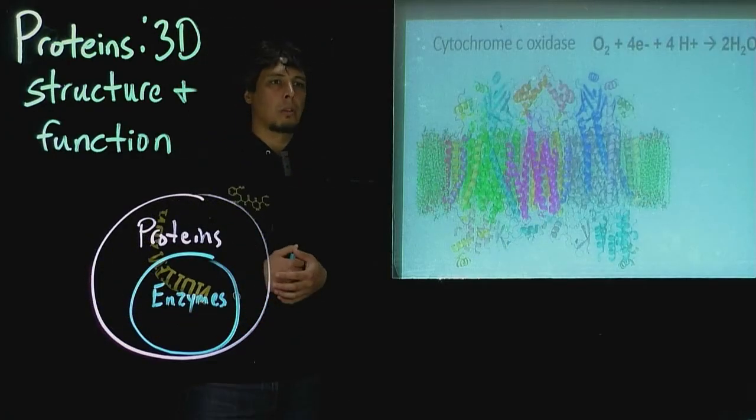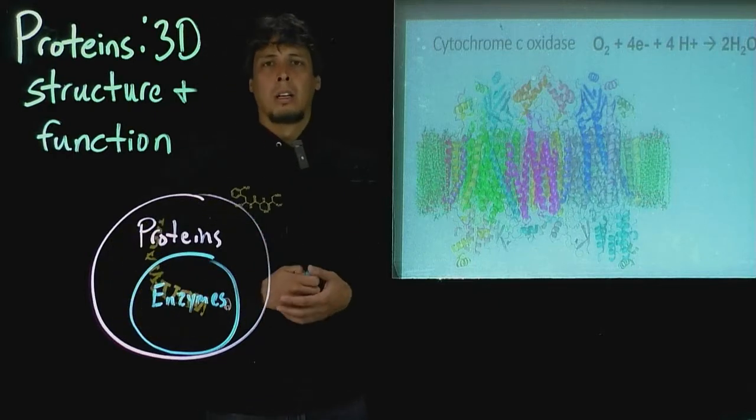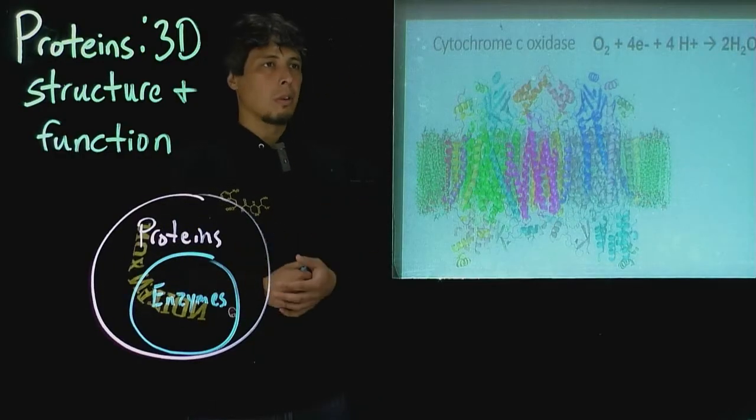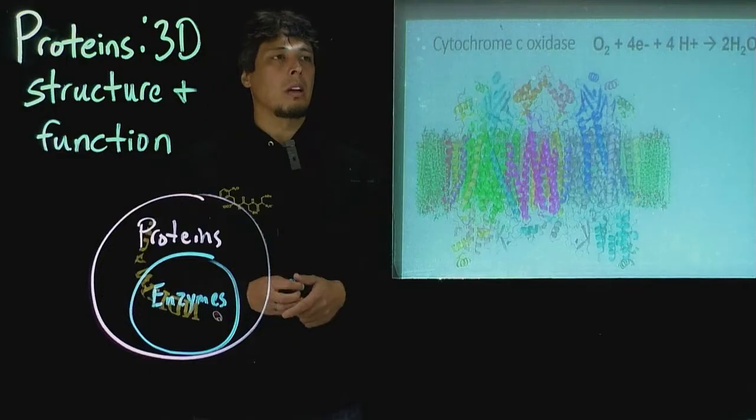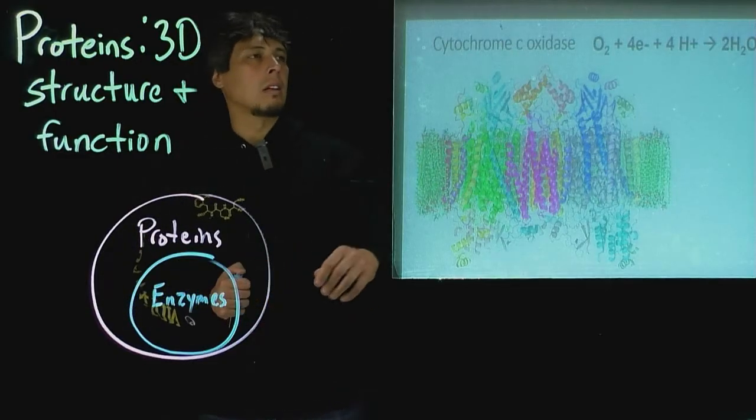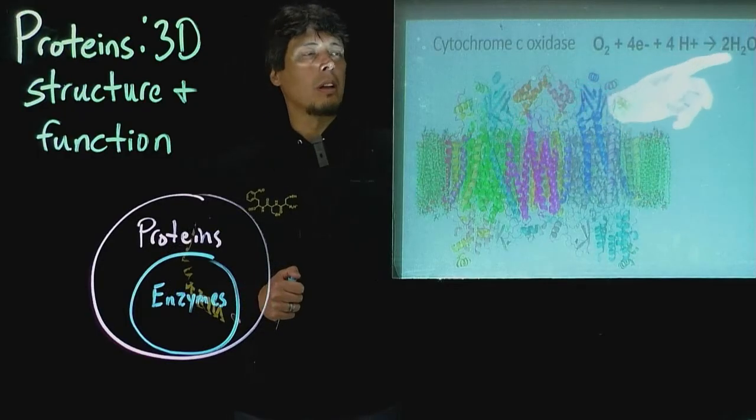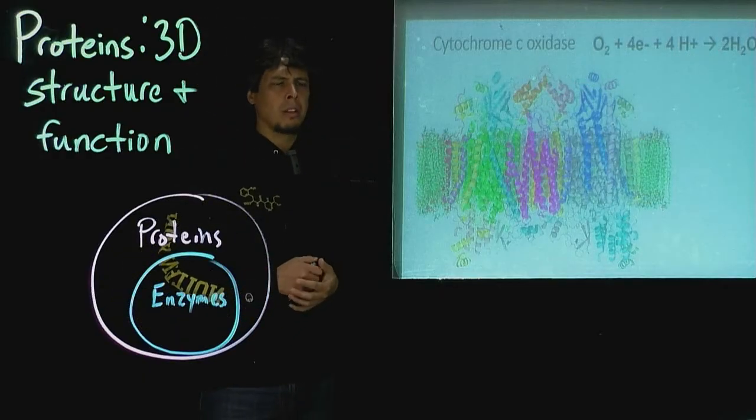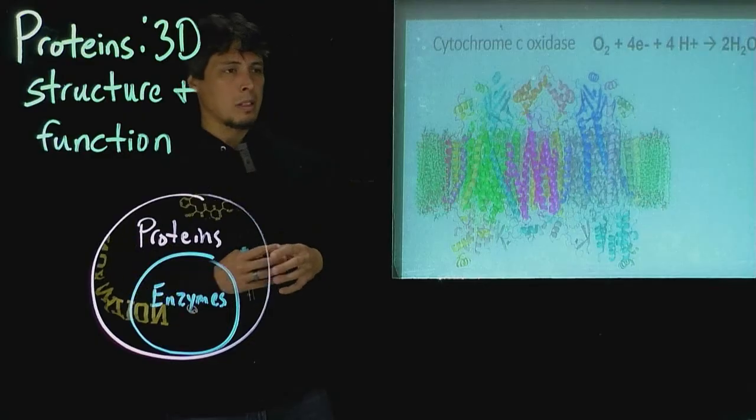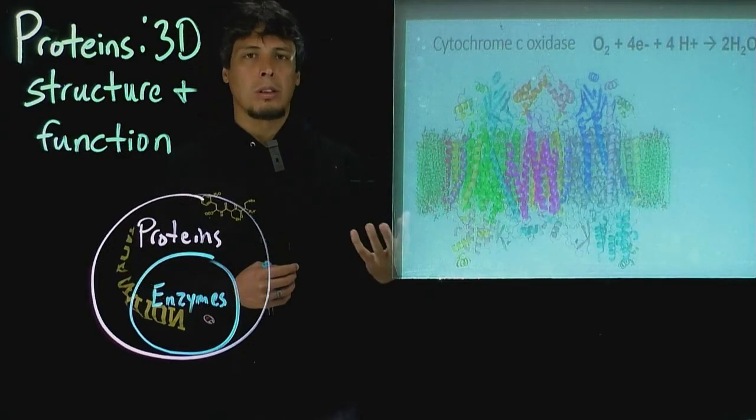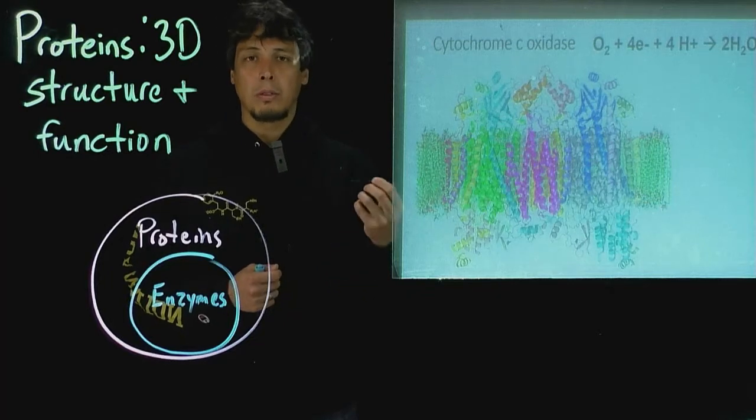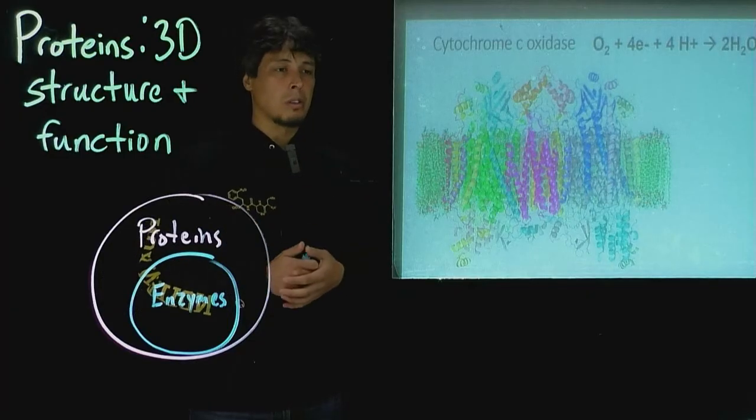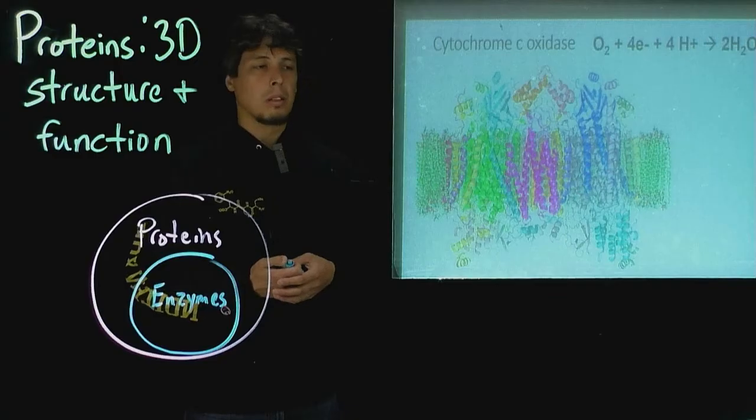So another thing that proteins might do is have some sort of enzymatic activity. A lot of the proteins actually are enzymes, and so they're able to catalyze different reactions. So one famous one, for instance, is the cytochrome C oxidase. This is able to catalyze the reduction of oxygen by four electrons to water. This is the last step, for instance, in respiration. The structure of this is very interesting. First of all, this is a very large protein and actually is comprised of several polypeptides. And we'll discuss more about the quaternary structure that's involved in some proteins that this requires.